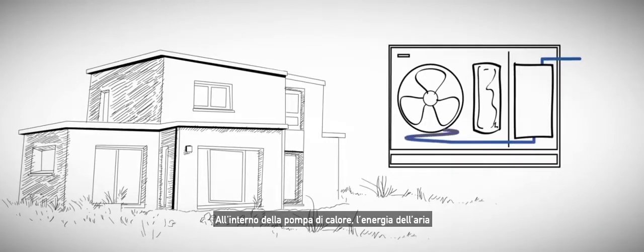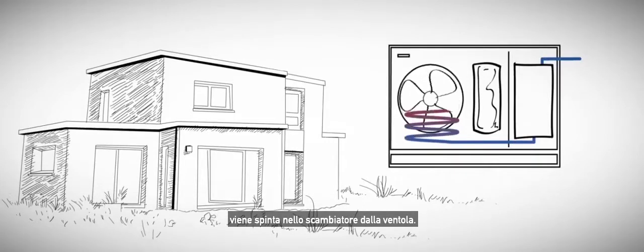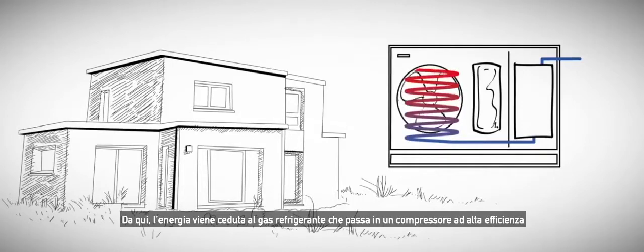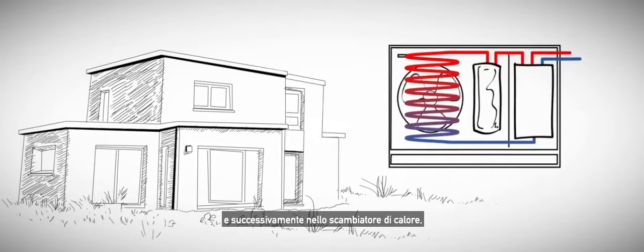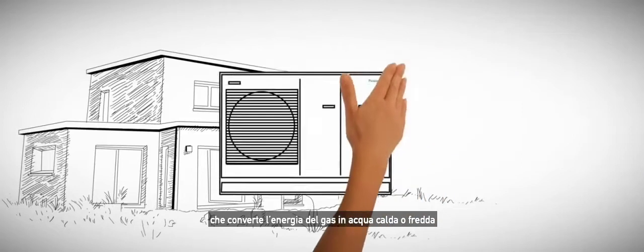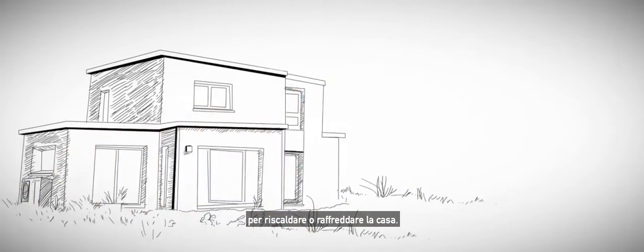Within the heat pump, air full of energy is pushed through the air heat exchanger by the fan. From there the energy is fed into a highly efficient compressor. Then this energy passes through the water heat exchanger which converts the energy into hot or cold water to heat or cool the home.